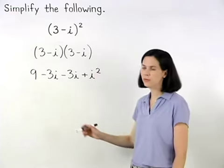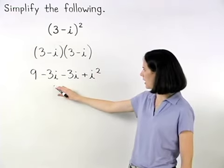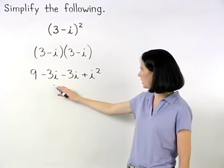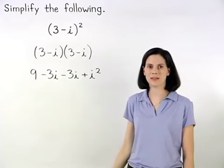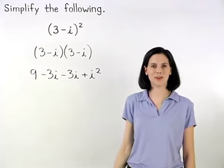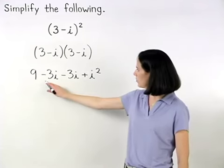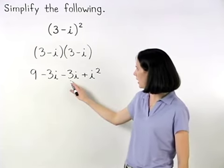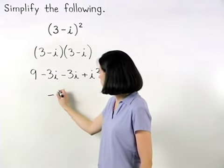So we have 9 minus 3i minus 3i plus i squared. Next we combine our like terms. Negative 3i minus 3i is negative 6i.